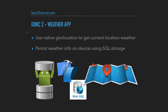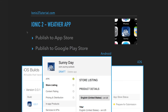We'll use the device's native geolocation to get the current local weather, and then we'll persist the city weathers to the device using SQL storage for persistence between app restarts. Finally, we'll package it up and publish to the Android and iOS app stores.